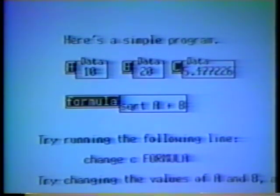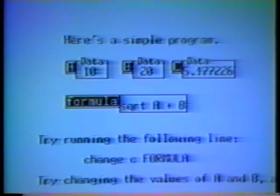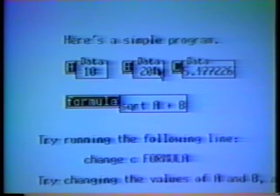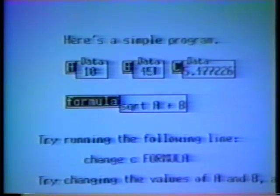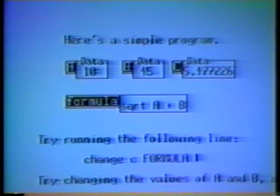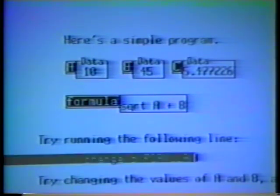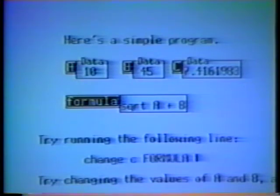A, b, and c here are variables in the Boxer programming language. Variables are always shown concretely as boxes on the screen. To change a variable, we can simply edit what is shown on the screen. And if a program changes the value of a variable, the value on the screen is updated automatically.